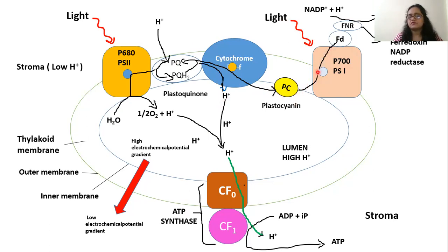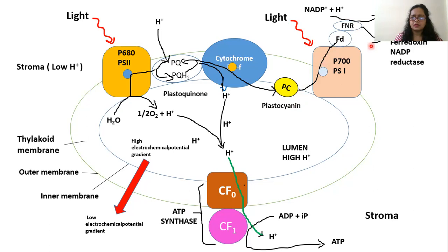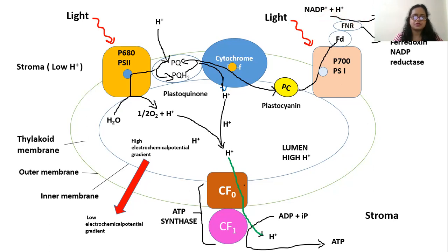PS1 accepts an electron from plastocyanin while also getting excited by incident light and releasing another electron. This electron pair is accepted by ferredoxin, an electron carrier of the electron transport chain of PS1. Ferredoxin, in the presence of ferredoxin-NADP reductase enzyme, reduces NADP+ to NADPH. NADP+ also requires protons along with the electrons to be reduced, and it gets these protons from the stroma of the chloroplast. So NADP+ plus H+ is reduced to NADPH in the presence of ferredoxin-NADP reductase enzyme.